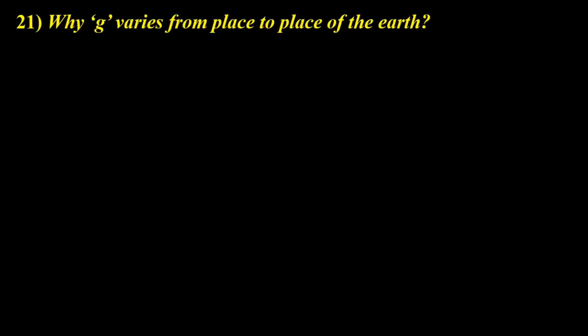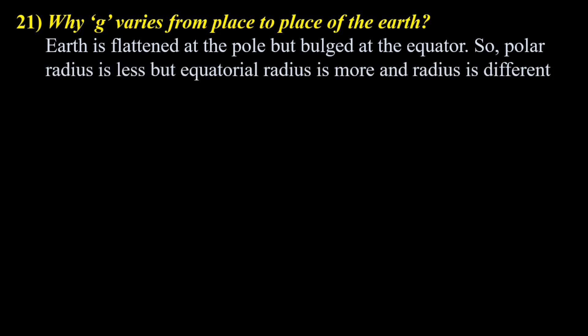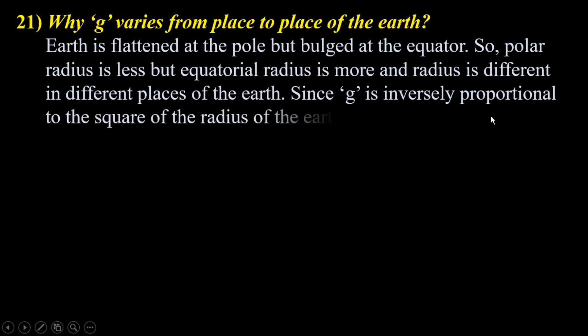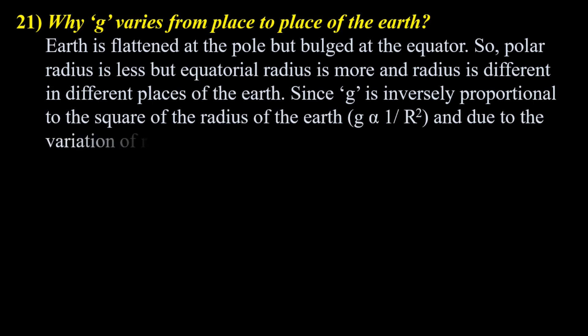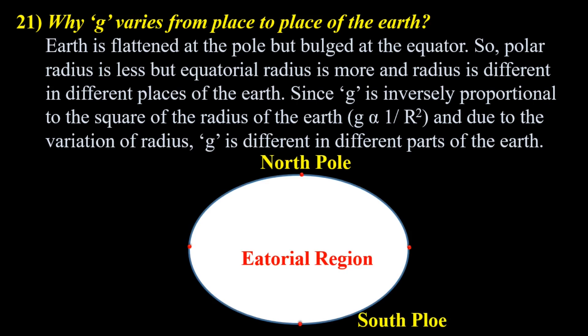Why does g vary from place to place on the Earth? Earth is flattened at the pole and bulged at the equator, so polar radius is less but equatorial radius is more, and radius is different in different parts of the Earth. Since g is inversely proportional to the square of the radius of the Earth, and due to the variation of radius, g is different in different parts of the Earth. This is all about the radius of the Earth.